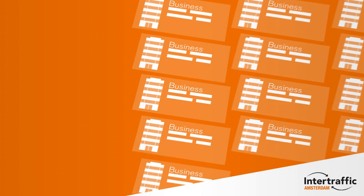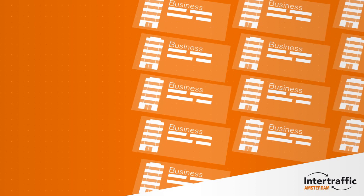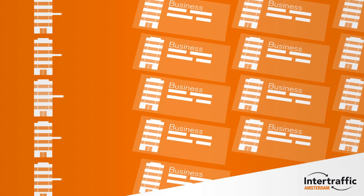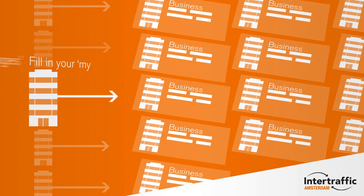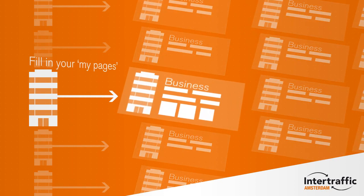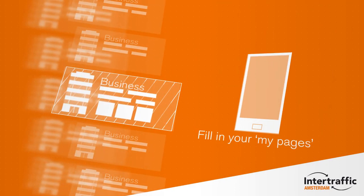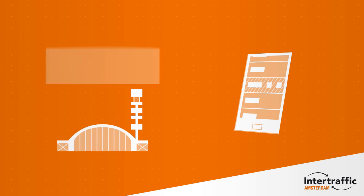Exhibitors usually only provide basic information to the online fair catalogue. With the special InterTraffic app, however, all online information will be found more easily. It is therefore important that exhibitors add all relevant information about their company. This will help visitors to prepare their visit beforehand. The organisation of the trade fair can also add information about seminars and workshops.